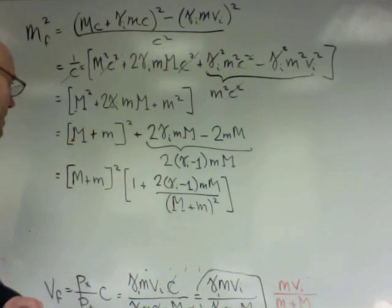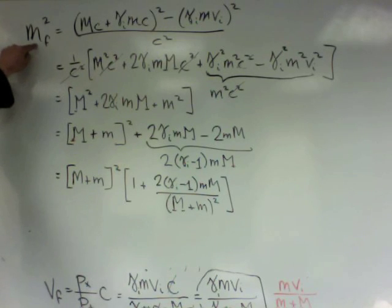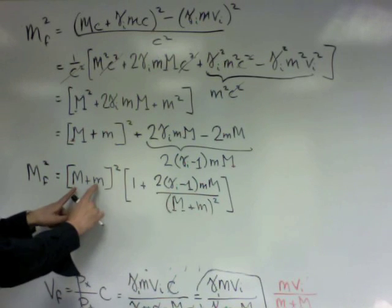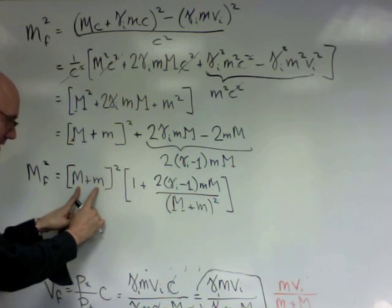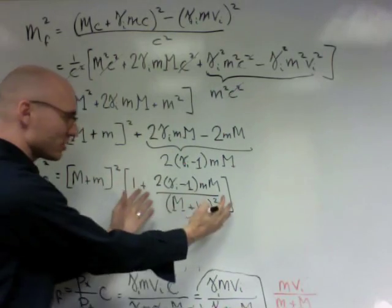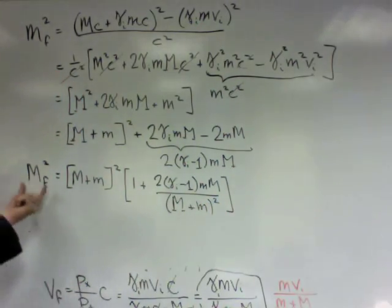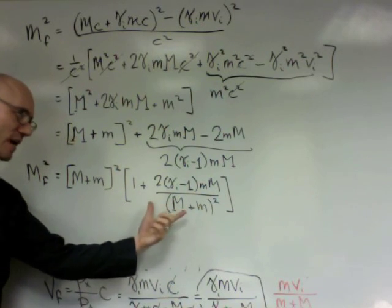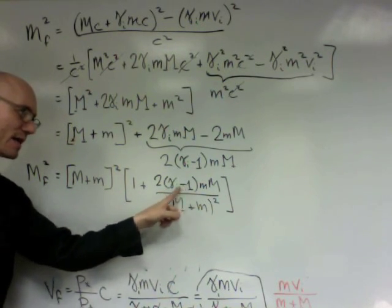So now I've written this as the final mass squared. This is the final mass squared is the sum of masses that were involved in the collision plus a correction factor, meaning the final mass is bigger than the sum of the masses we started with by a correction factor, which depends on gamma minus 1.